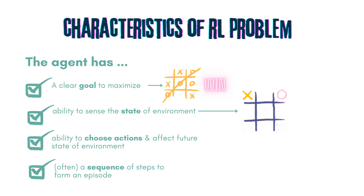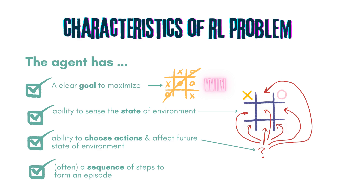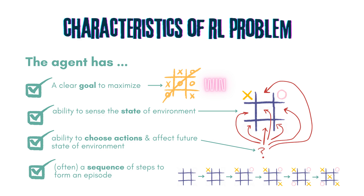Secondly, the state of the environment is quite simple — it is a three-by-three grid with nine spaces, where each space can be taken by player one, player two, or remain empty. Thirdly, based on the state, a player can access all options for its next move by looking at the remaining open spaces and choose the best action. Finally, the game goes through a sequence of time steps until one of the players wins or the game results in a draw.